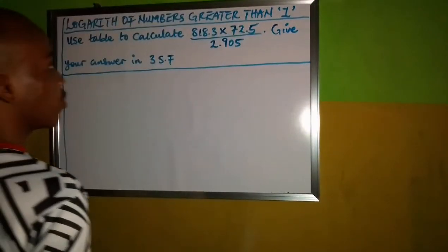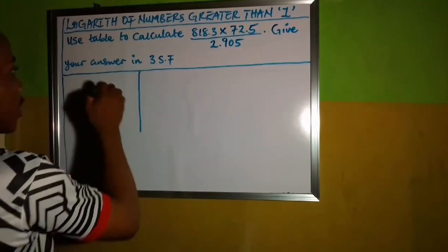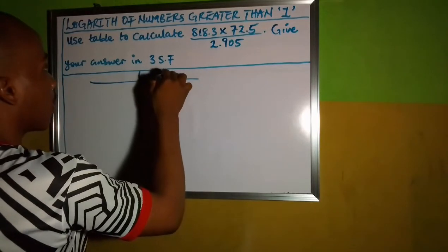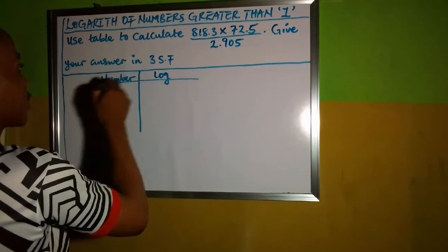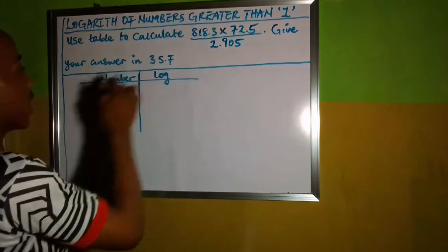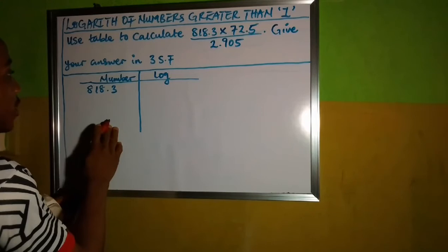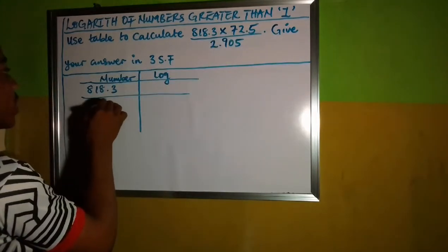The first thing we can do from here now is to create a table. The table we are going to be creating, we make here log and make here number. Now, what is the first figure here? That's 818.3. And the next one is 72.5.